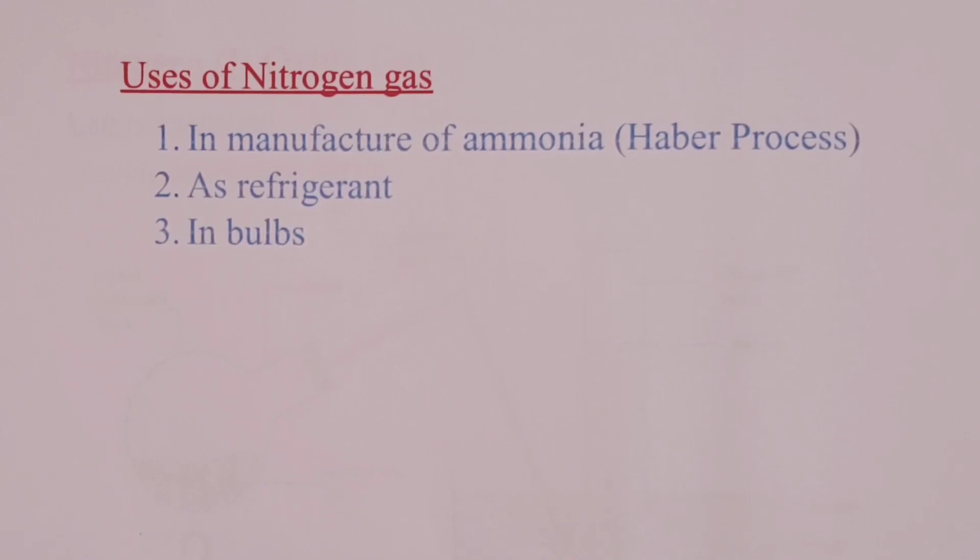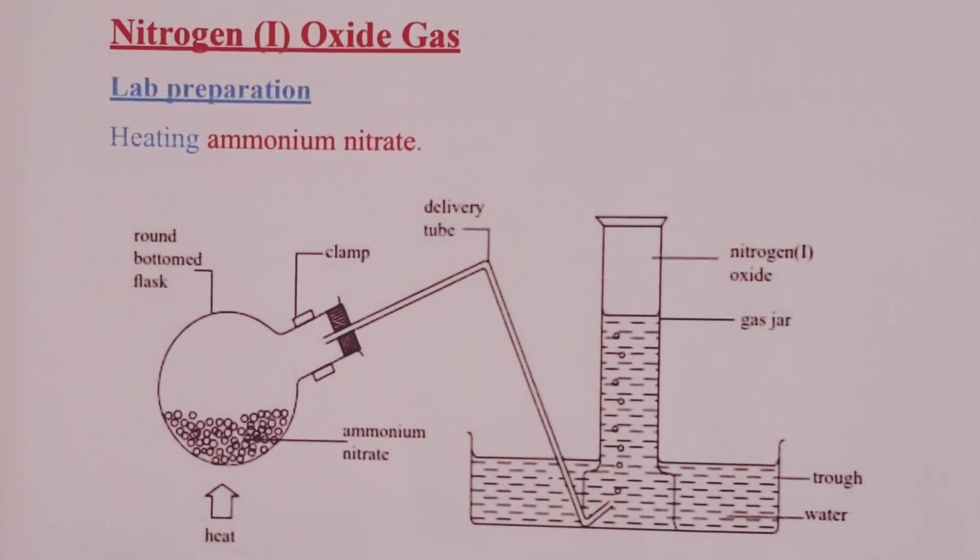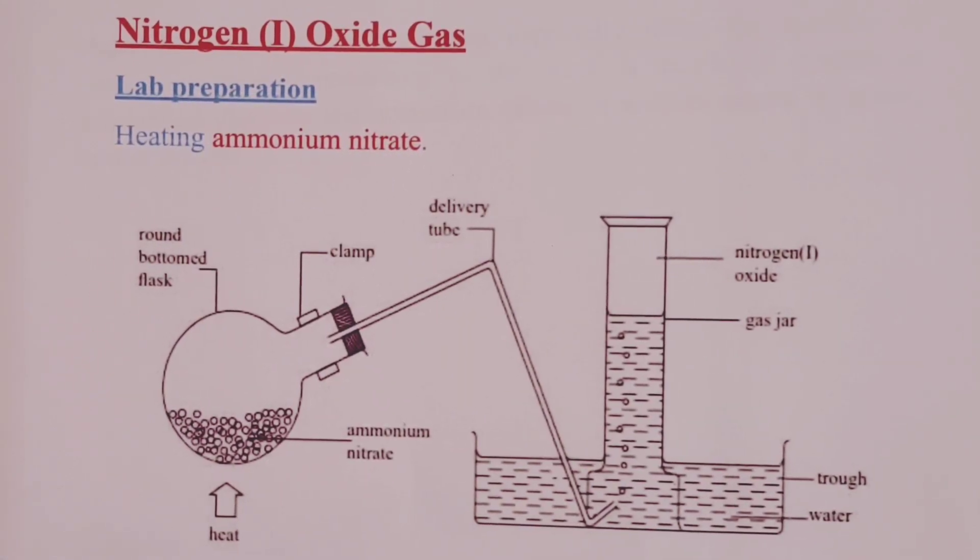We also use nitrogen in bulbs. With that, let us now cross over to the first oxide of nitrogen called nitrogen (I) oxide.